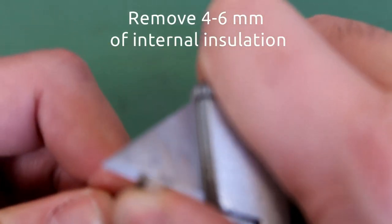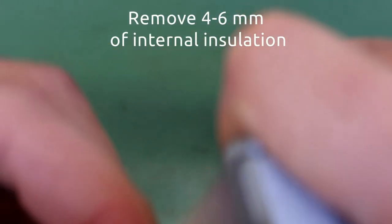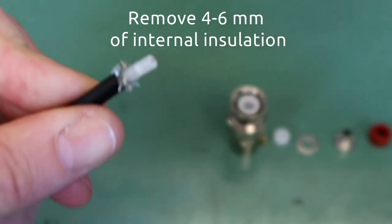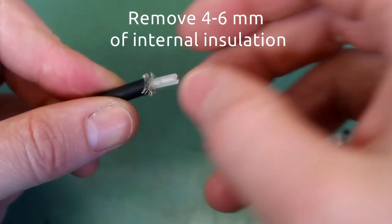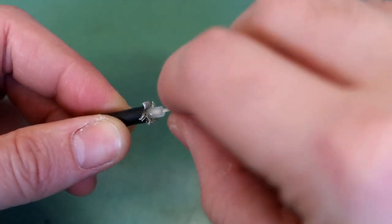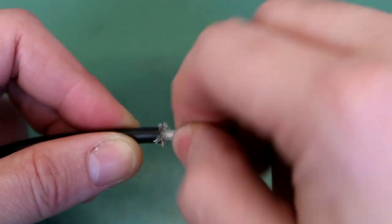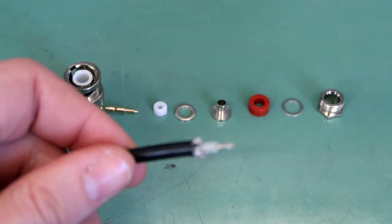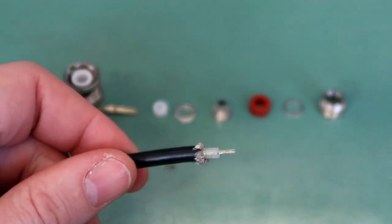The next step is to remove internal insulation about 4-6mm.